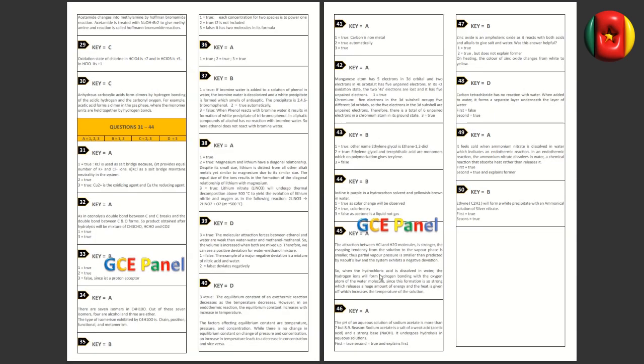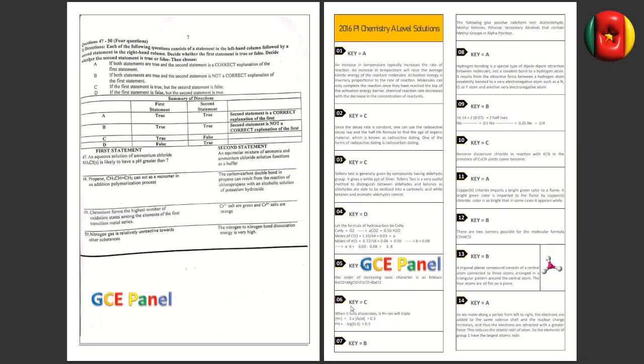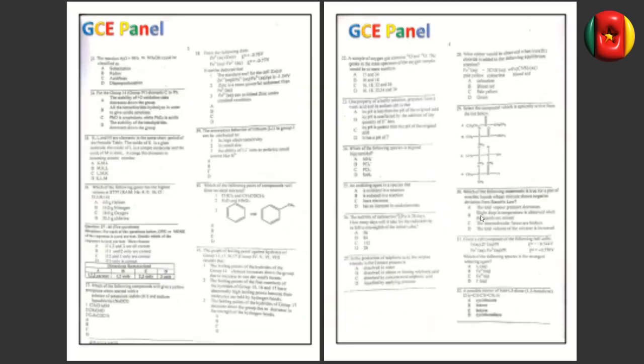These are the detailed explanations for 2015. Then we move down to 2016 where we equally have the detailed explanations for 2016. We have the equations and the solutions with explanations as you can see.